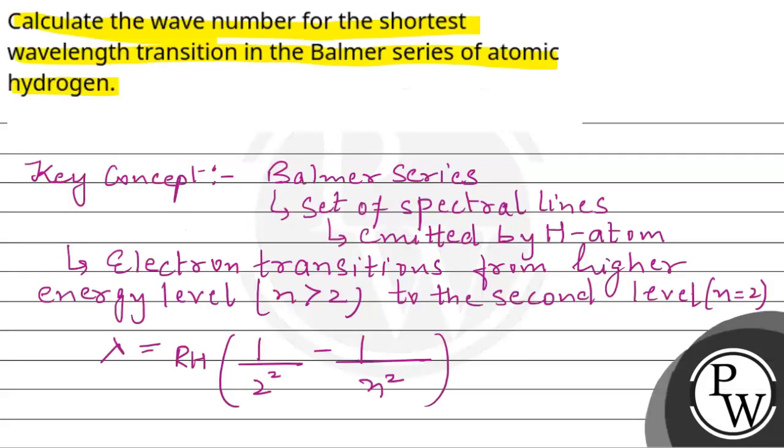तो यहां पर हम इसका values सबकी put कर देंगे. तो wave number shortest will be equal to 1.097 multiplied by 10 raised to power 7 per meter, multiplied by 1 divided by 4. तो यहां जो है इसका answer आ जाएगा हमारे पास 2.7425 multiplied by 10 raised to power 6 per meter. यानि के यहां पर जो value है wave number shortest की is 2.7425 multiplied by 10 raised to power 6 per meter.